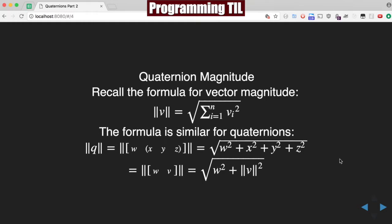Recall the formula for vector magnitudes. It's going to be the square root of the sum of the squares of all the vectors within it. The formula is similar for quaternions. We'll say the magnitude of wxyz is equal to the square root of the sum of the squares of its parts. And then, same thing in the shorthand version, we'll have the square root of the w squared plus the magnitude of the vector squared.